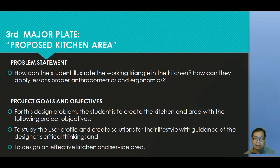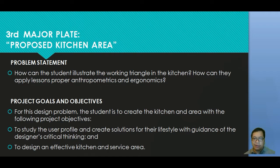Our problem statement is: how can the student illustrate the working triangle in the kitchen, and how can they apply lessons in proper anthropometrics and ergonomics? When you design your kitchen, you have to understand the size of its users in relation to the appliances or utensils. For this design problem, the student is to create the kitchen area with the following objectives: first, to study the user profile and create solutions for their lifestyle using design thinking, and second, to design an effective kitchen and service area.